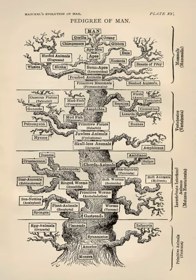Quantum biology is an emerging field; most of the current research is theoretical and subject to questions that require further experimentation. Though the field has only recently received an influx of attention, it has been conceptualized by physicists throughout the 20th century. Early pioneers of quantum physics saw applications of quantum mechanics in biological problems. Erwin Schrödinger's 1944 book What is Life? discussed applications of quantum mechanics in biology, introducing the idea of an aperiodic crystal that contained genetic information in its configuration of covalent chemical bonds.